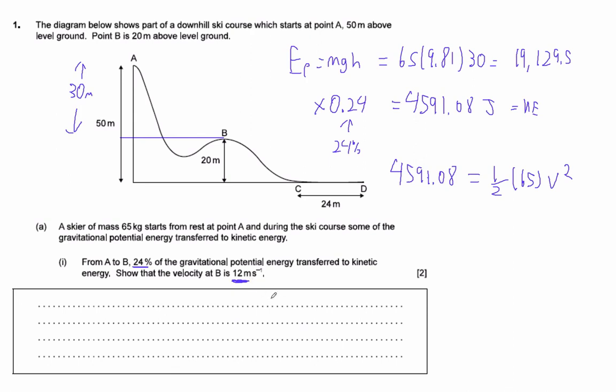What's interesting is in the mark scheme, the markers have to see the unrounded version. They have to see 11.9 or 11.88 in order to give the second mark, because of course they give you the answer.